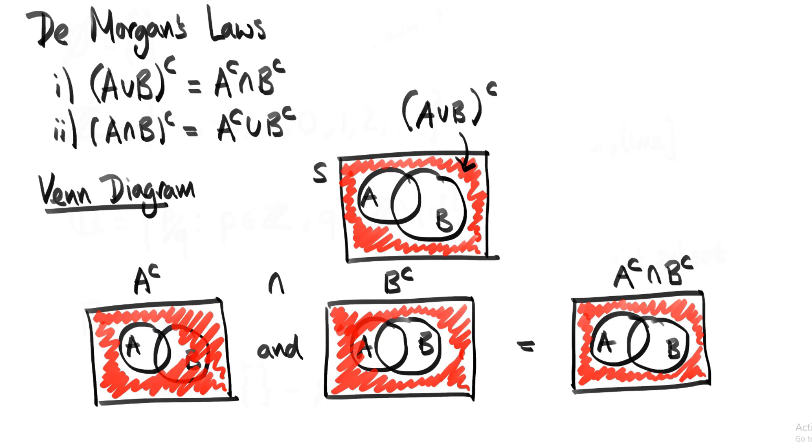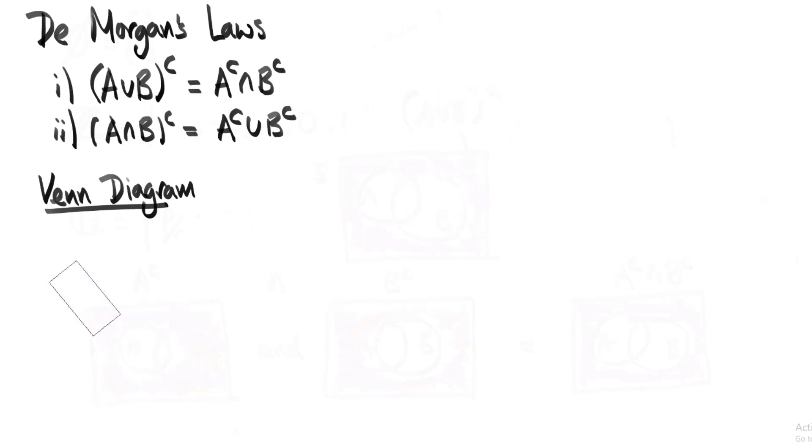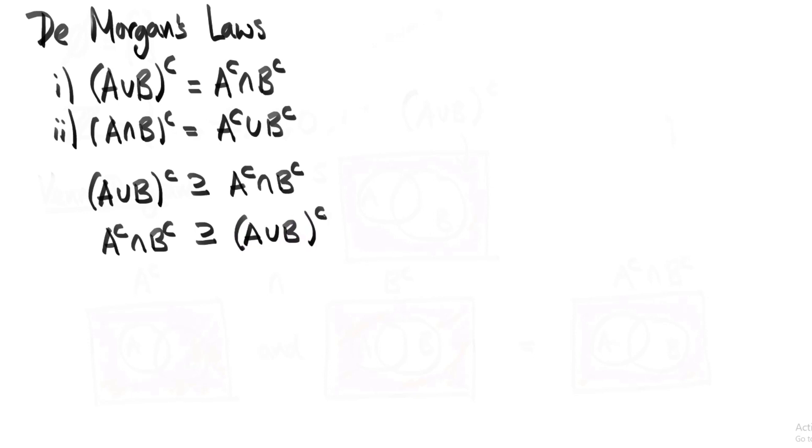So how are we going to prove De Morgan's laws? Remember how I said that B is a subset of itself. So if the two sets in the first statement really do equal each other, then they're both going to be subsets of each other. That is, A complement intersection B complement is a subset of A union B complement, and A union B complement is a subset of A complement intersection B complement. We're going to solve the second of these two statements.